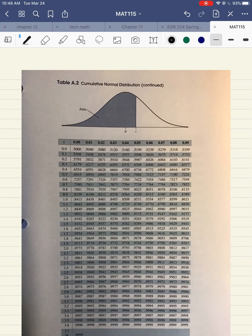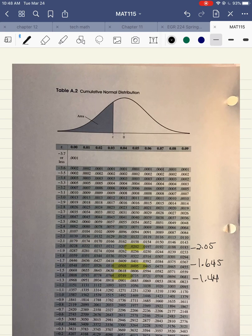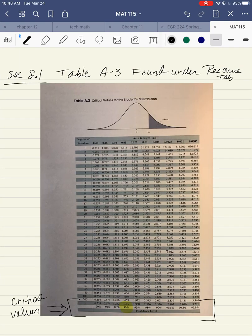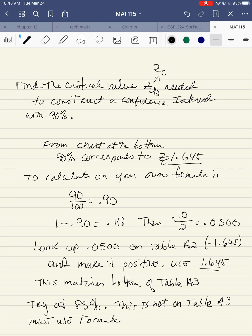And from table A2, 0.0500, I've already found it here. It's exactly between these two numbers, 0.505 and 0.495. In this particular case, if it's exactly between two numbers, you're going to estimate the point in between. So this corresponds to a negative 1.645. And this is exactly what was calculated on table A3 right here at the bottom. Since it comes up negative on table A2, you're always going to make it positive. So you just use the positive number, 1.645.